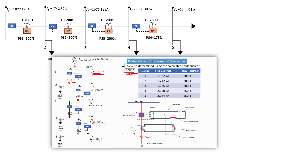Then we moved into tutorial number five, where we dealt with current transformers. You need to select the current transformer that must protect your bus bar in order to protect it in case of a short-circuit current. In tutorial five we saw how to select that current transformer and went into some of the theory behind the working principle of the current transformer.